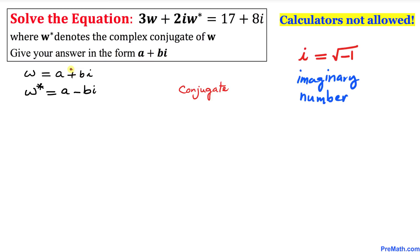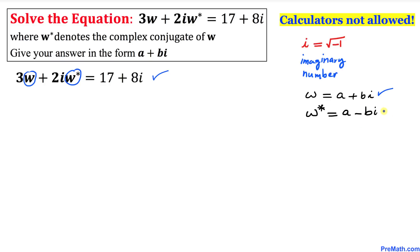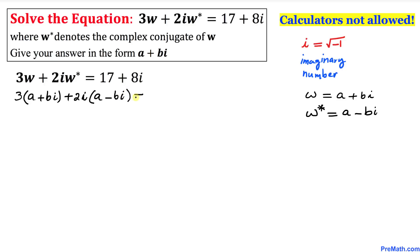Then its conjugate w-star can be written as a minus bi. The only difference is we switch the sign — positive becomes negative. Now let's focus on the equation. Wherever we see w and w-star, we are going to replace them with a plus bi and a minus bi respectively. So 3 times (a plus bi) plus 2i times (a minus bi) equals 17 plus 8i.